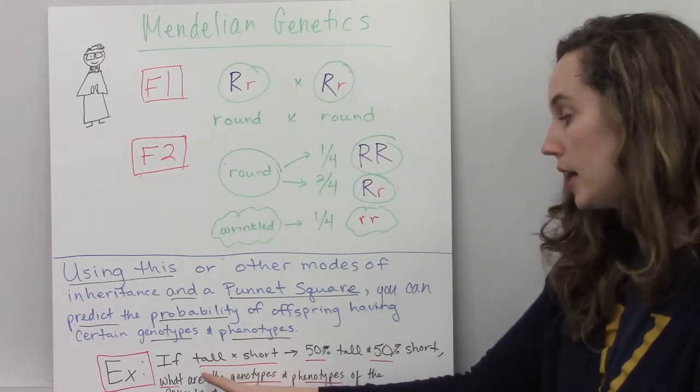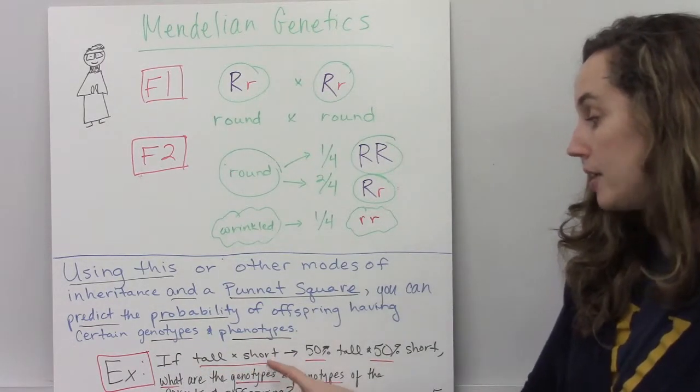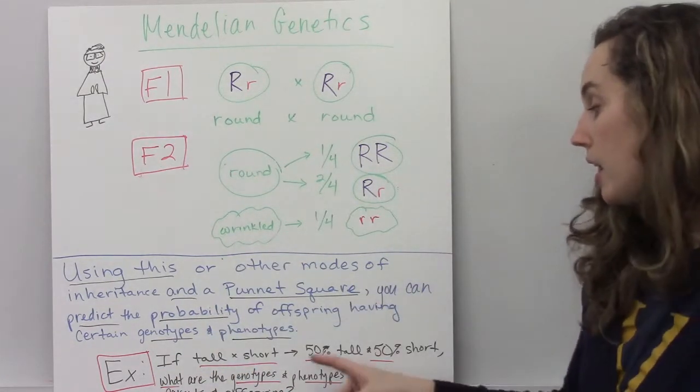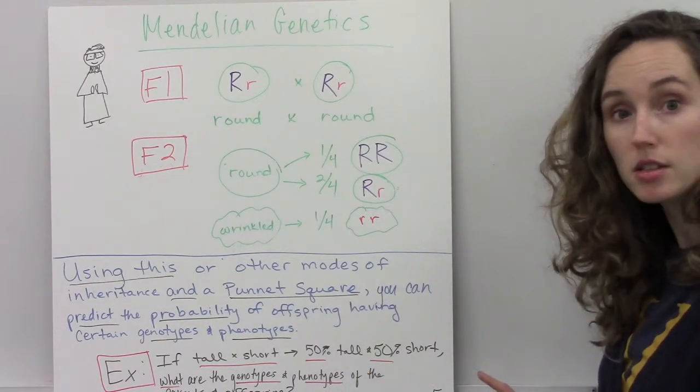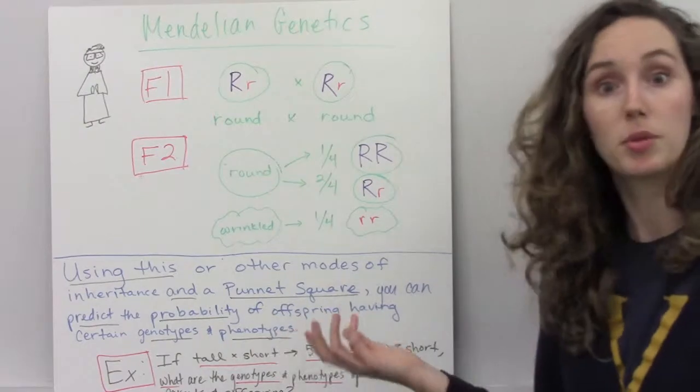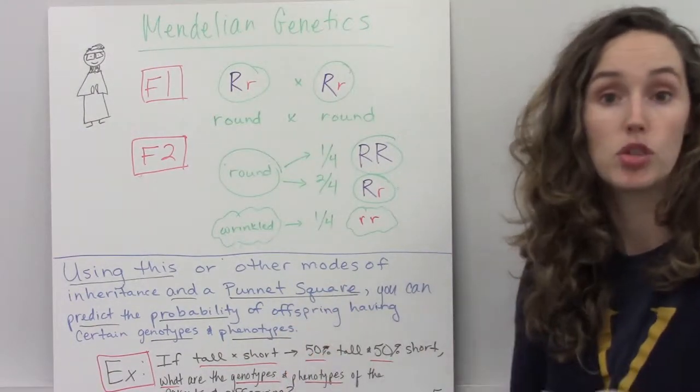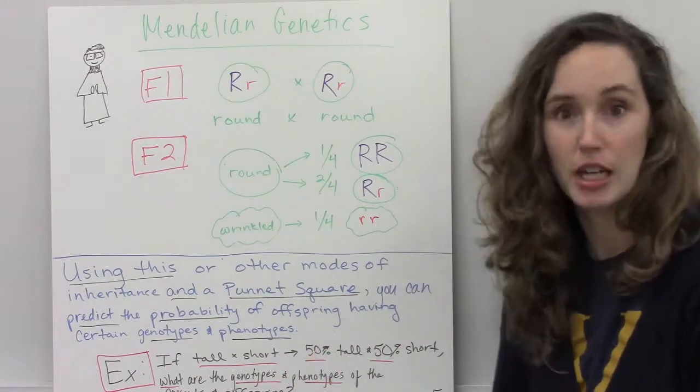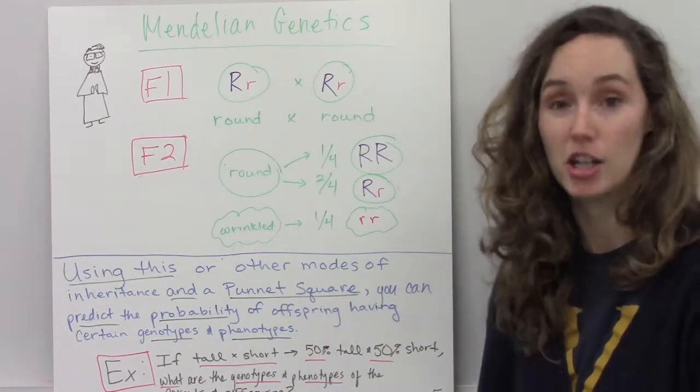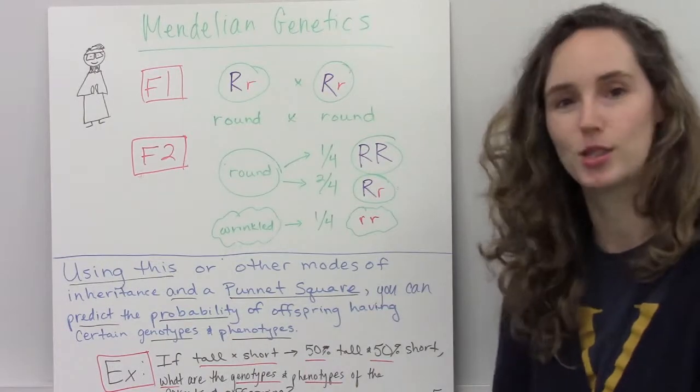And the offspring had 50% tall plants and 50% short plants, what's the probability, or what are the possible genotypes and phenotypes of both the parents and the offspring? Check out the next video on Punnett Squares to figure out how to use that tool to answer questions like these.